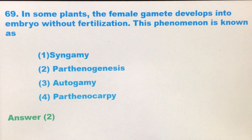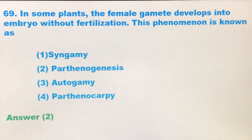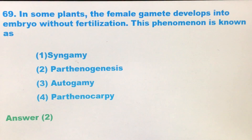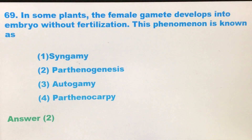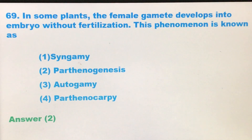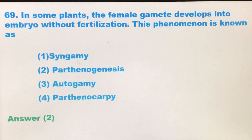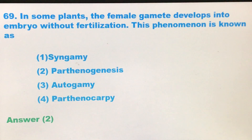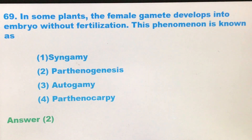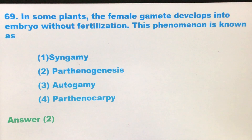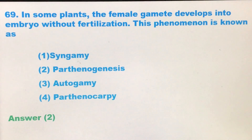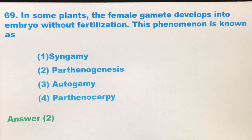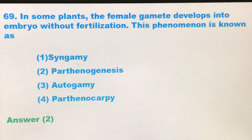Now what is parthenocarpy? Are parthenogenesis and parthenocarpy the same? No, they are two different processes. Parthenogenesis is the development of a female gamete into an embryo without fertilization. Parthenocarpy is the development of that embryo, obtained through parthenogenesis, into a fruit. That is called parthenocarpy.